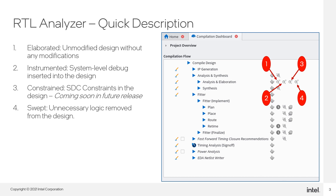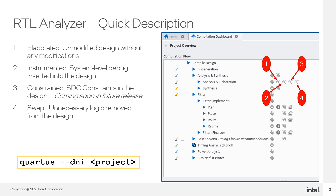And finally, the fourth magnifier will show you the RTL with all unnecessary logic removed from the design. To have all these options loaded, launch your project with a Quartus terminal with the --dni option as shown below in the yellow rectangle.